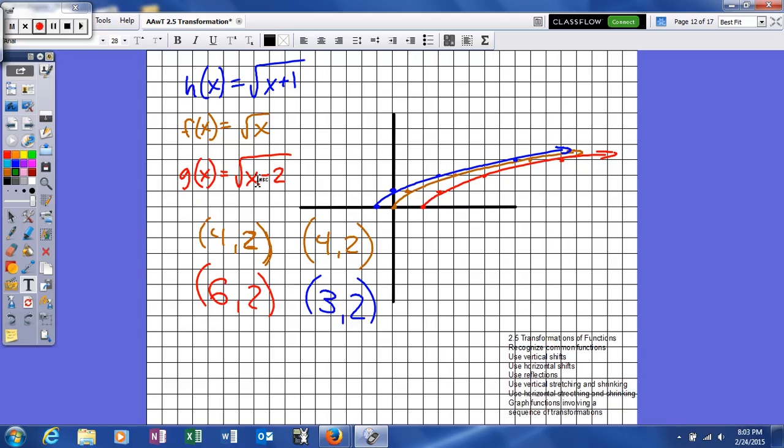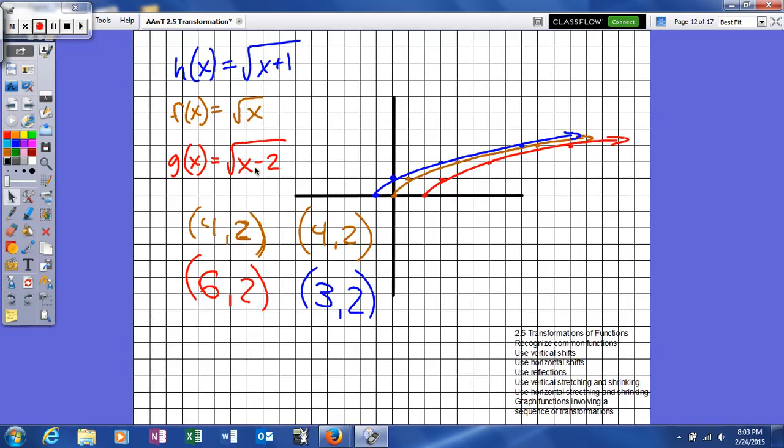Looking down here at g of x, now this time it's x minus 2 that we're taking the square root of. So this time what it's going to do, it's going to shift our graph to the right 2. So as you can see, this point moved to the right 2 would be here, here would be here, here that's going to move there, and here that's going to move there.